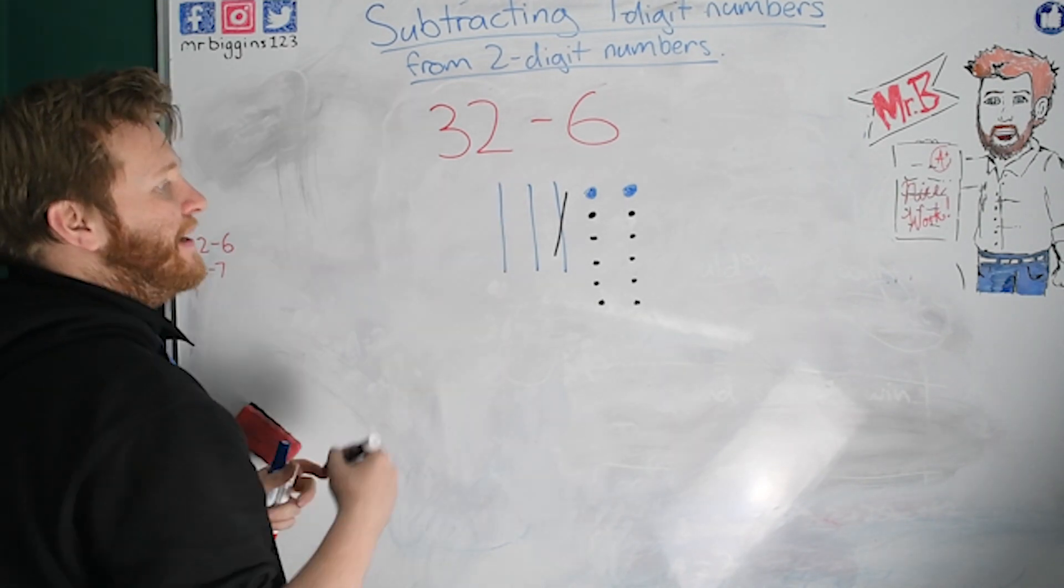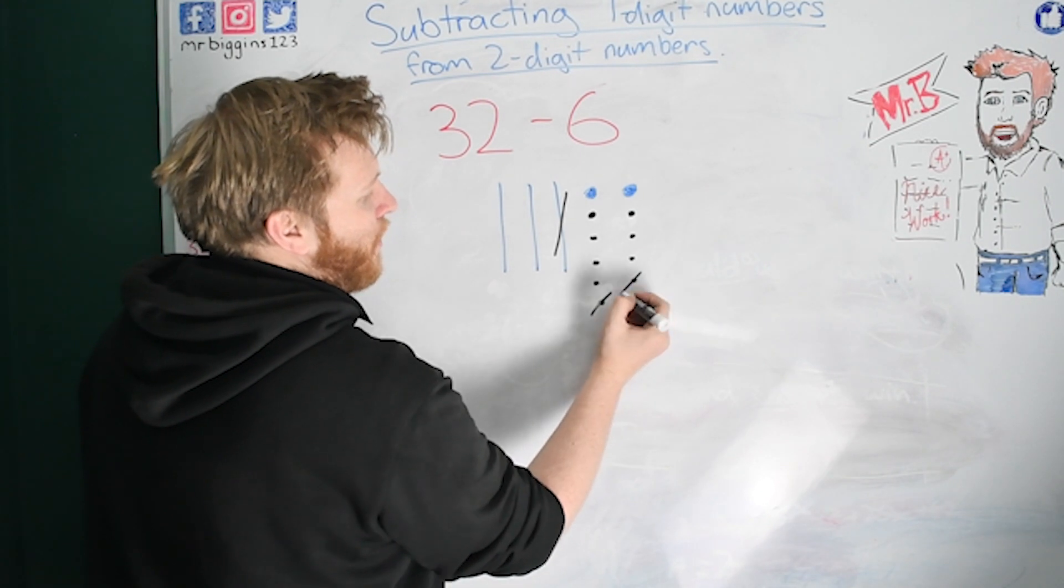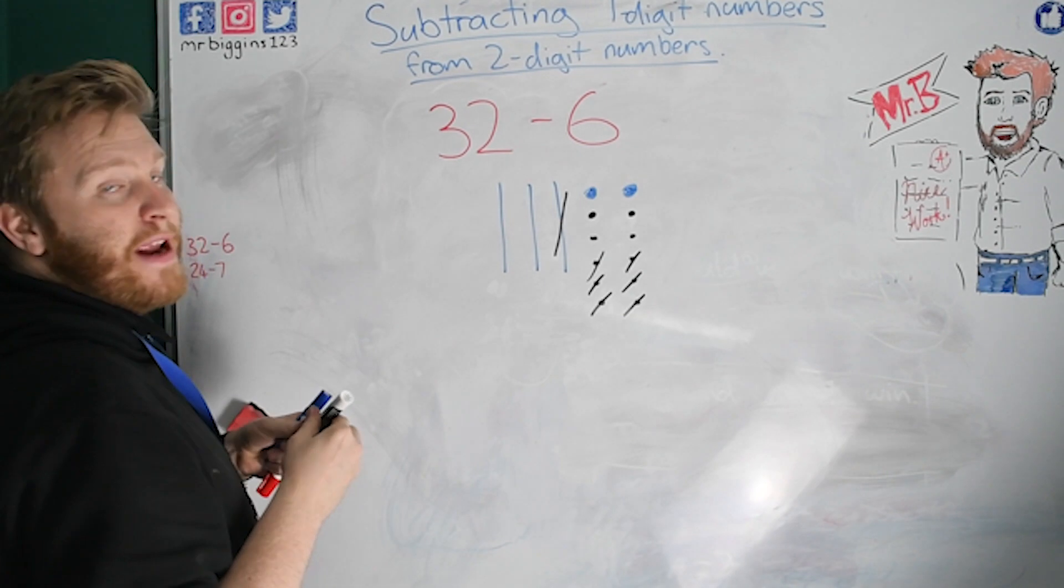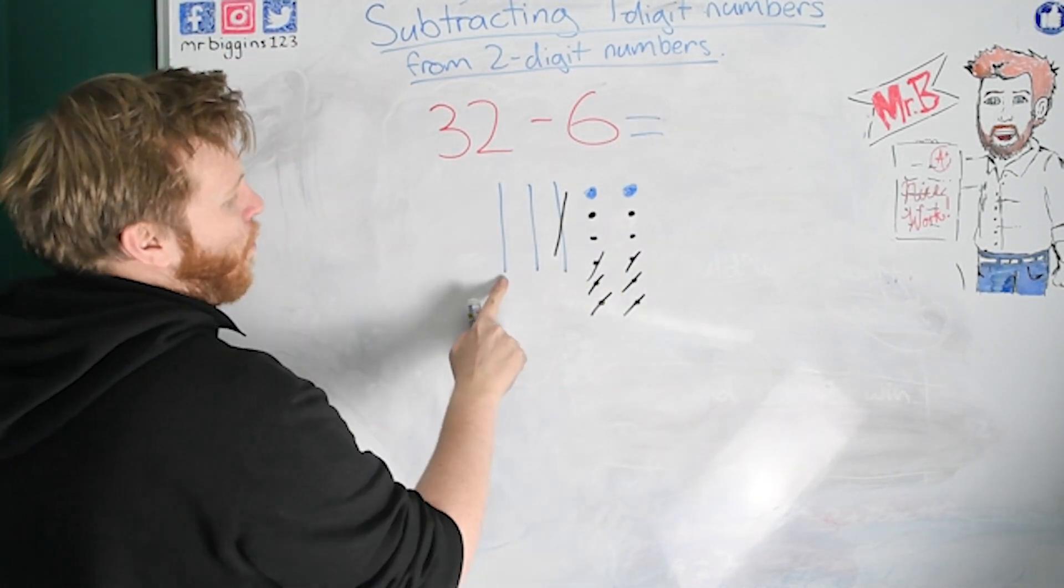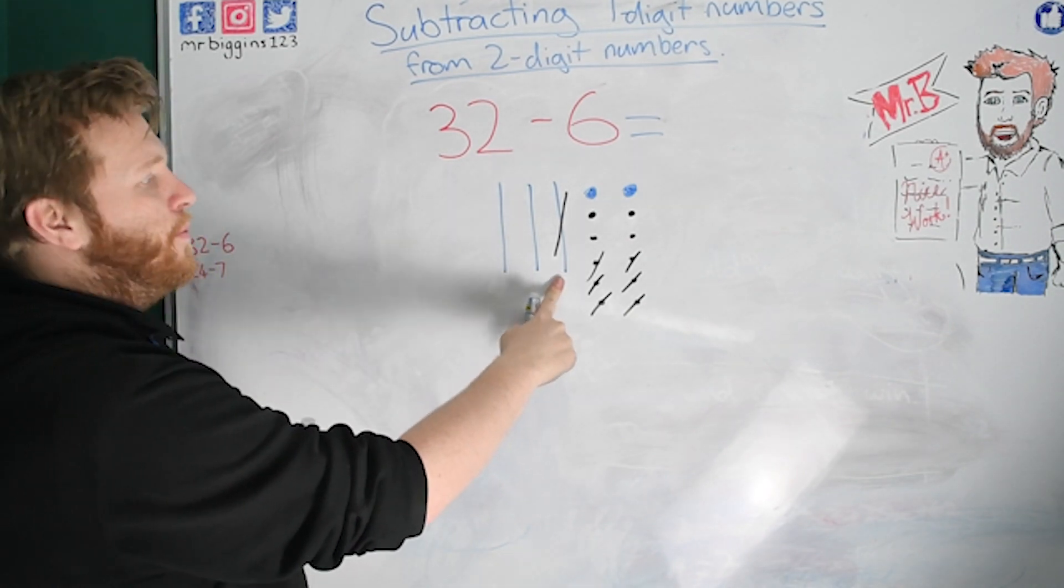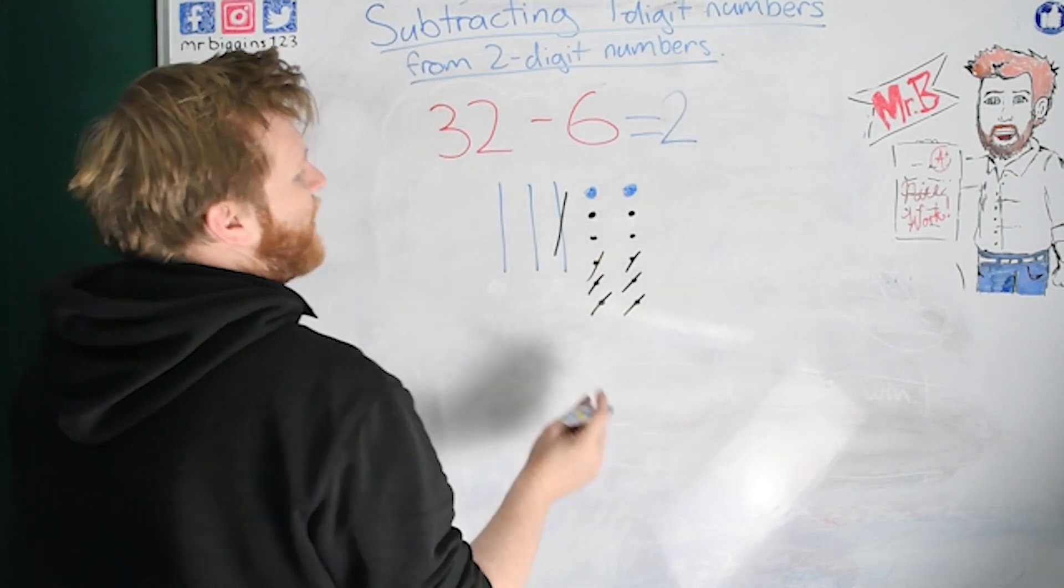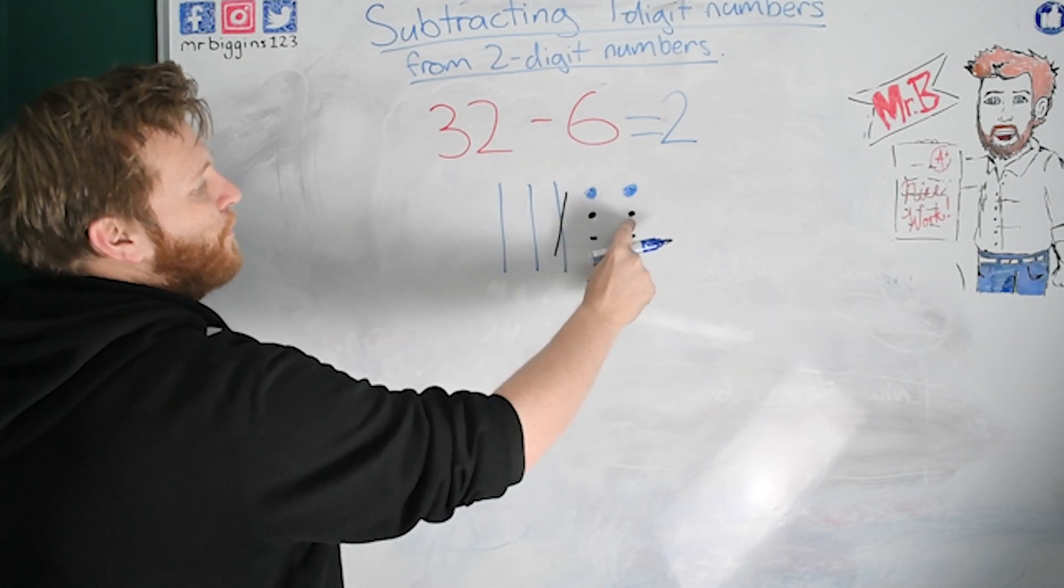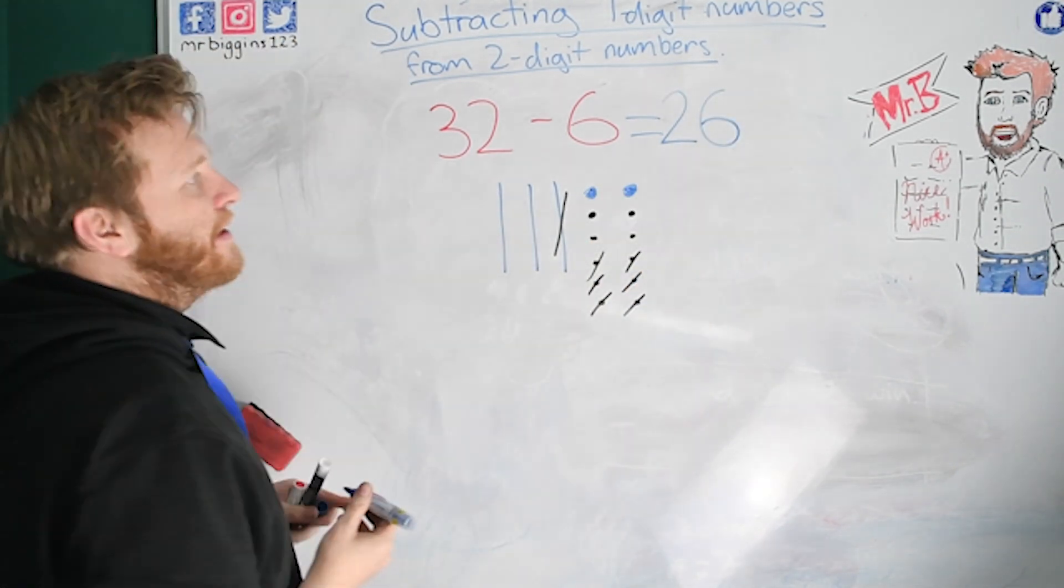So now I've got more than six ones, haven't I? So I can take away six now. Let's take away six. One, two, three, four, five, six. So now I can work out my answer. I can count my tens. One, two. That one I swapped so I don't have it. So I have two tens. And now I count how many ones I've got left. One, two, three, four, five, six. So my number is twenty-six.